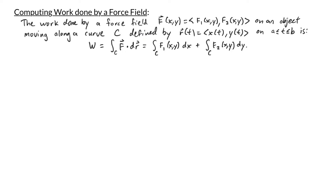In our last video we saw that the work done by a force field f with components f1 and f2 on an object moving along a curve c defined parametrically by r of t on an interval from a to b is given by w equals the line integral of f dot dr, which is the same as the line integral of f1 dx plus the line integral of f2 dy.